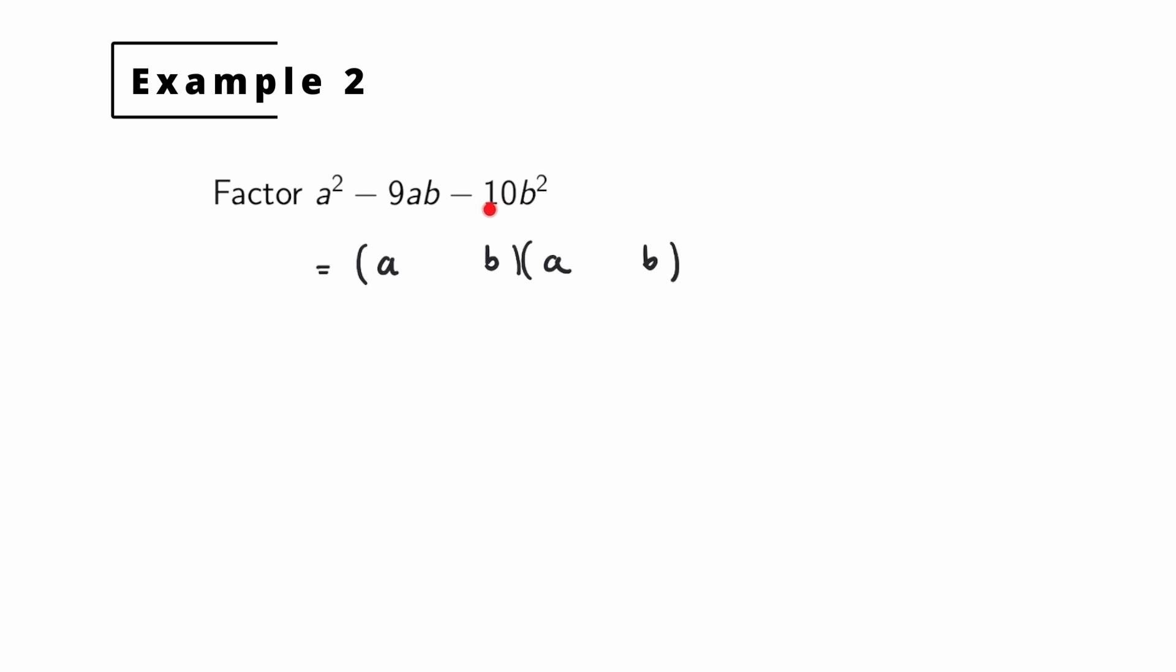We're simply looking for two numbers whose product is -10 and whose sum is -9. Now what two numbers are that? Well, -10 and positive 1 will have a product of -10 and a sum of -9, and so you can just slot those two numbers in as the coefficients of b in each binomial. So one is -10 and the other is positive 1. If you multiply this back out you'll see that we end up exactly where we started.